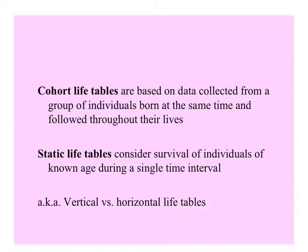Life tables were first invented by the insurance industry to figure out the probability of people of different ages and types of lives surviving. There are two kinds of life tables: the cohort life table, based on a group of individuals moving through time together — data collected from a group born at the same time and followed throughout their lives, sometimes called horizontal life tables. Static life tables consider the survival of individuals of a known age during a single time interval, taking a slice of the population at that time, and may be called vertical life tables.